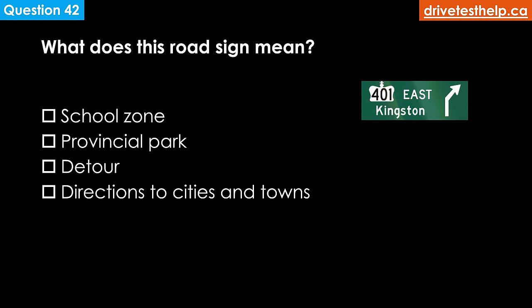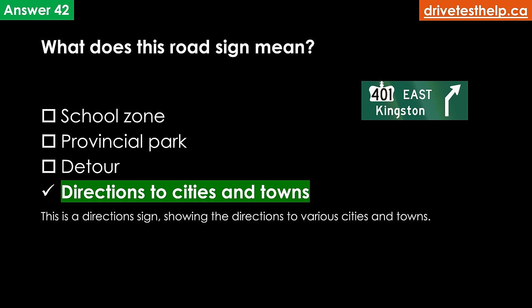What does this road sign mean? Options: school zone; provincial park; detour; directions to cities and towns. The correct answer is directions to cities and towns.